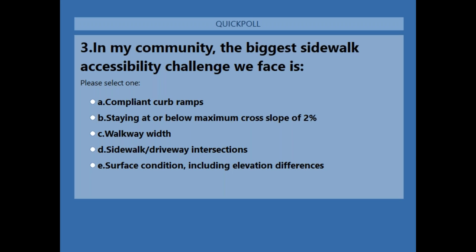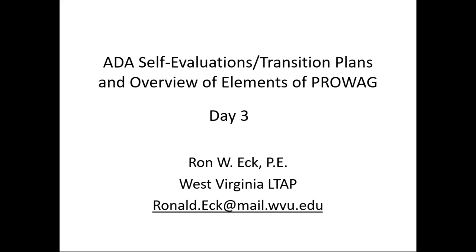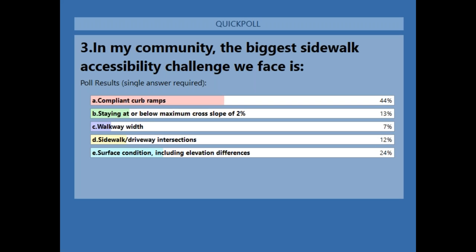With 80% of you having voted, I'll close the poll and share results. 44% said compliant curb ramps are the biggest challenge. 13% said staying at or below the 2% maximum cross slope. 7% said walkway width, 12% said sidewalk-driveway intersections, and 24% said surface condition including elevation differences.